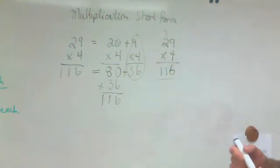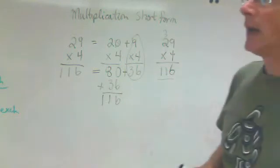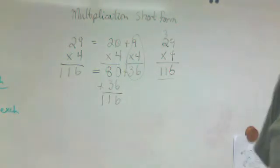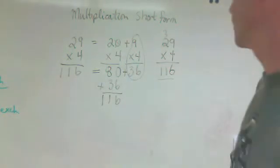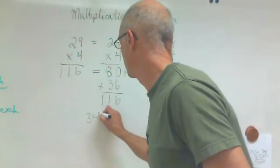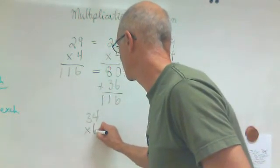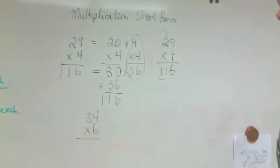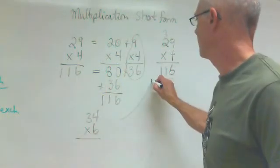That's the short form. So your job is to do this next question. It's been given to you for homework to do short form. And that's 34 times 6. So 34 times 6. The short form this way if you can.